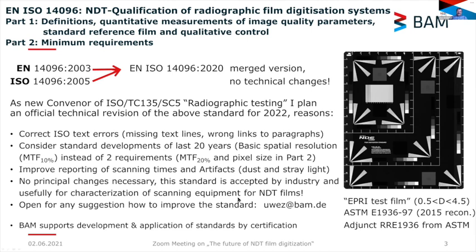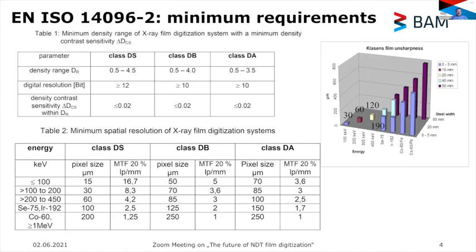In principle, no major changes are necessary — the standard is still accepted by the industry and useful for characterizing NDT film scanning equipment. If you have any suggestions for the future revision, you can send them to my email or through the standard ISO standardization channels. This is my task where BAM supports the development and application of standards through research, testing, and certification.